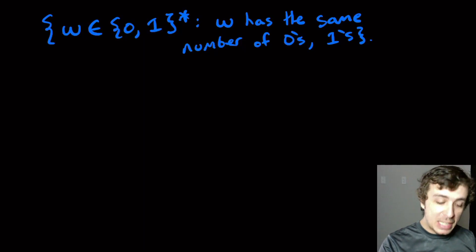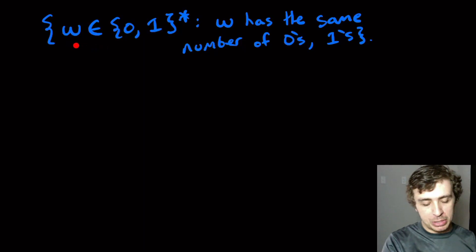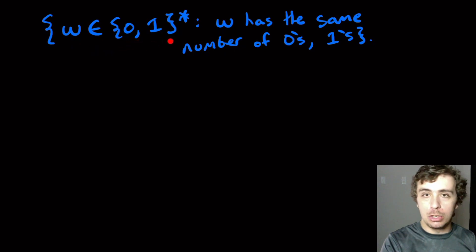Okay, so let's prove that this language is not regular. It's the set of all strings over {0,1}* such that the string has the same number of zeros and ones.